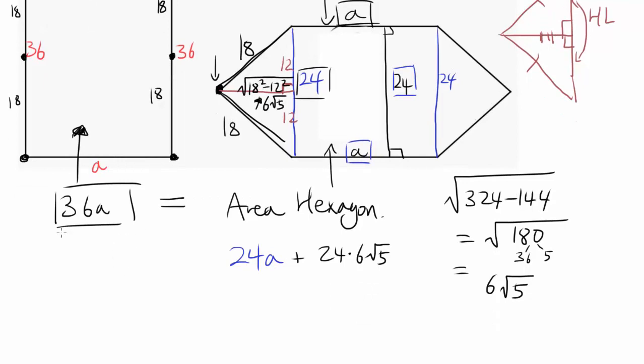Now what can we do? Well, you have 36a and 24a, so you can move 24a over to the other side, getting us 12a is 24 times 6 times square root of 5.